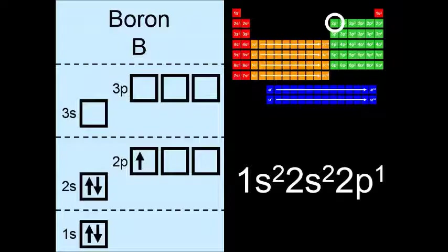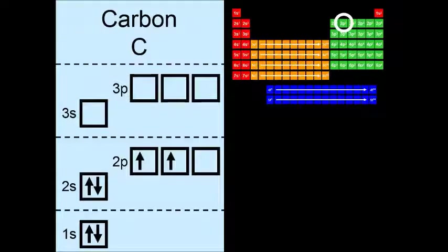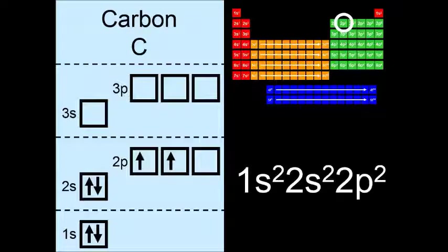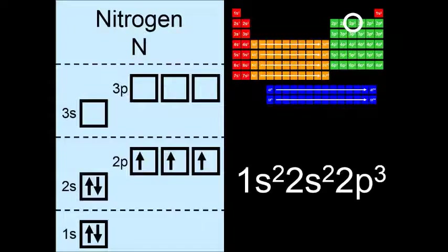As we continue from boron to neon, we simply add one more electron into the 2p sublevel. And remember, according to Hund's rule, the electrons will go into separate orbitals. So carbon looks like this, and nitrogen looks like this. So 1s2 2s2 2p3.